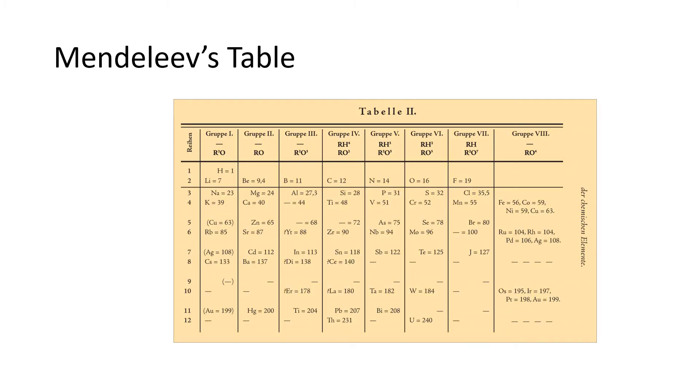This slide shows a version of the periodic table that Mendeleev had proposed. And what I'd like to point out on this table is that as he arranged the elements into groups, which are the headings up here at the top, they were based on what sort of a formula the element formed when it made a compound with oxygen or when it made a compound with hydrogen. So he was looking at the chemical reactivity to arrange these elements in groups.